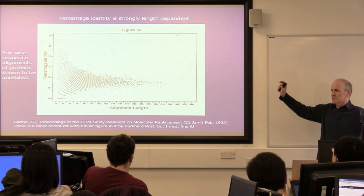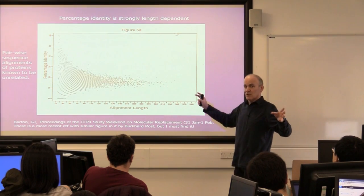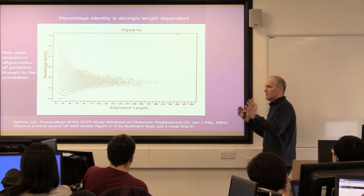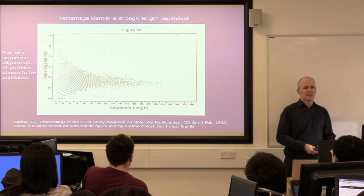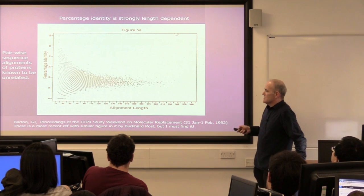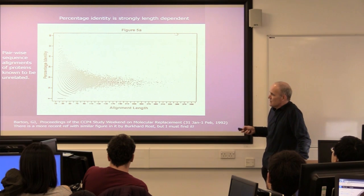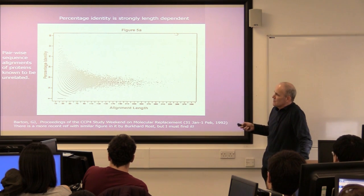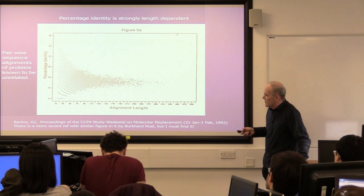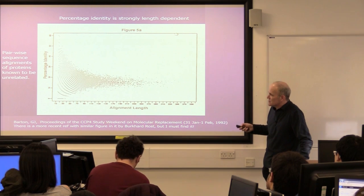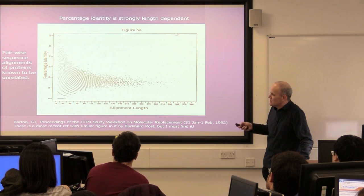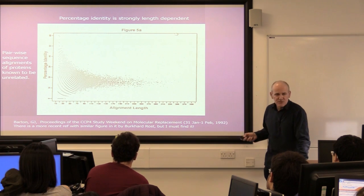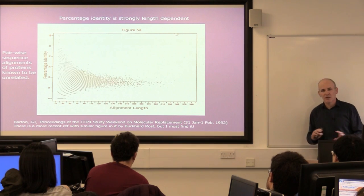These proteins have completely different three-dimensional structures and are not evolutionarily related, at least not in recent evolution. And yet you can run them through an alignment program, get an alignment, and it will give you a number. As the alignment length gets shorter, you'll see a higher likelihood of getting a high percentage identity. This scale ranges from 0 to 60 — for very short sequences you'll see identities of 40%, and even out at 110 residues, by chance alone, you'll see sequence identities of maybe 30% between completely unrelated sequences.